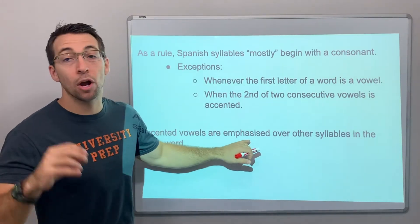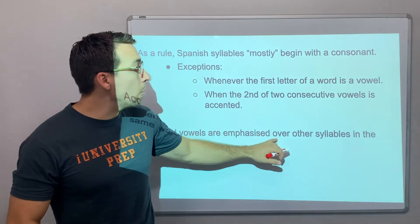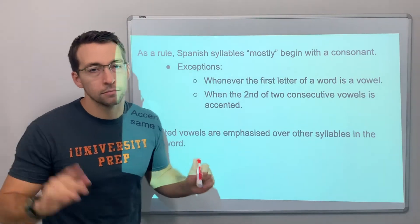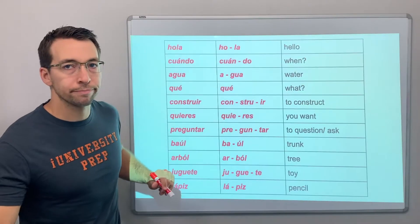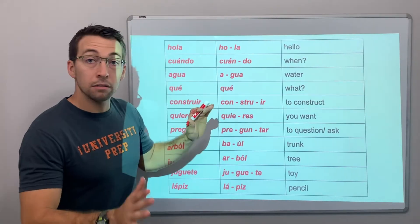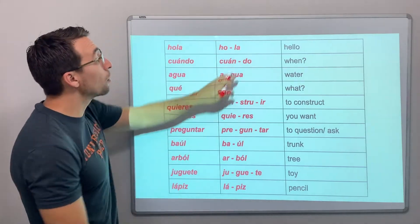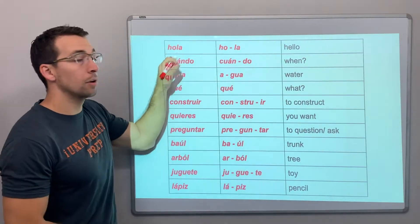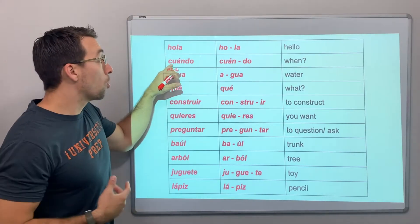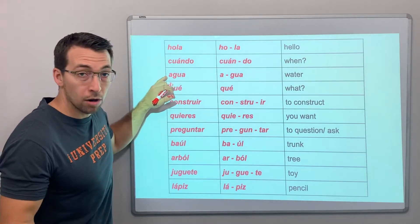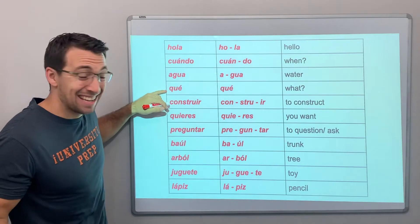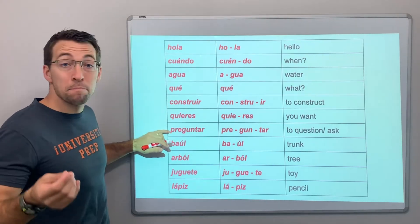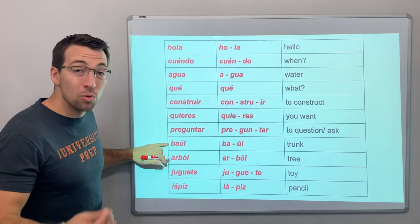Accented vowels are emphasized over other syllables in the same word. Here are some Spanish words where I'll break the word down into syllables, then give the translation: hola, cuando, agua, que, construir, quieres, preguntar, baúl.